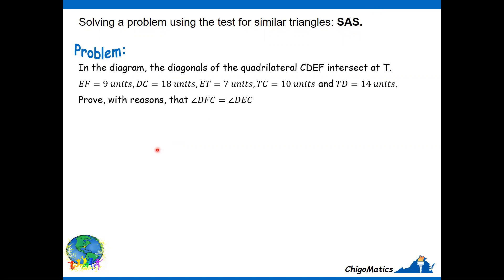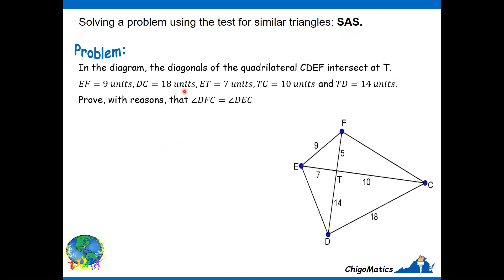Here is the problem. In the diagram, the diagonals of a quadrilateral CDEF intersect at T. EF equals 9, DC equals 18, ET equals 7, TC equals 10, TD equals 14. Prove with reasons that angle DFC equals angle DEC.